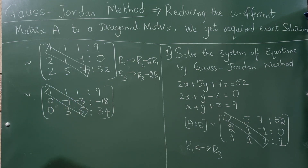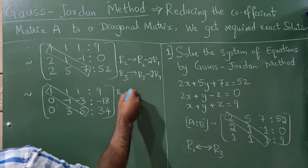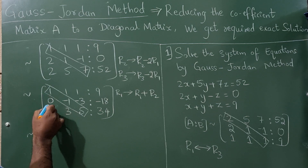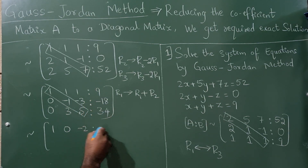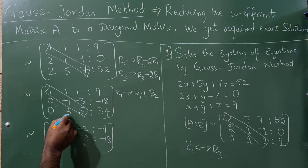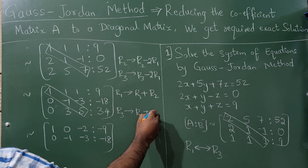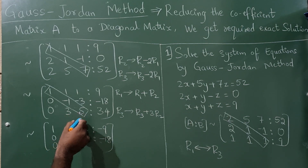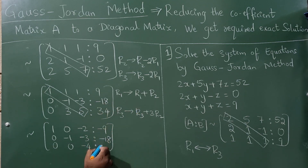Now these two elements have become 0. Now you have to make the remaining off-diagonal elements 0. To make this element in R1 zero, R1 becomes R1 + R2. So: 1 + 0 = 1; 1 - 1 = 0; 1 - 3 = -2; 9 - 18 = -9. Write the second row as it is. For the third row, R3 becomes R3 + 3 times R2. So: 3 - 3 = 0; 5 + 3·3 = -4; result is -4, 34, and -20.